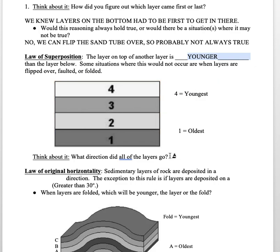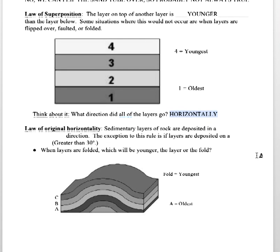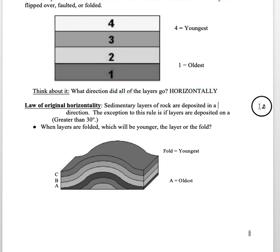We also saw from our sand tube model and colored container that all the layers went horizontally. We already know this from gravity. Sedimentary layers of rock are always deposited in a horizontal direction. The exception to the rule is that layers are deposited on a hill or slope that is greater than 30 degrees. You saw in the other video that we tilted it just so and it made that vertical layer.